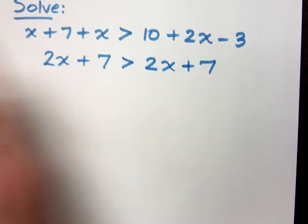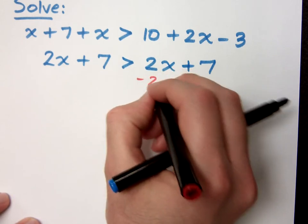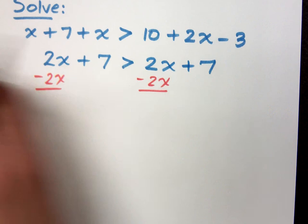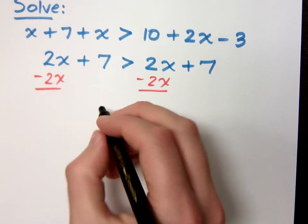That's kind of weird. If I get all the x's to one side, I know how you like to have the x's on the left, so minus 2x on both sides, and I end up with this.